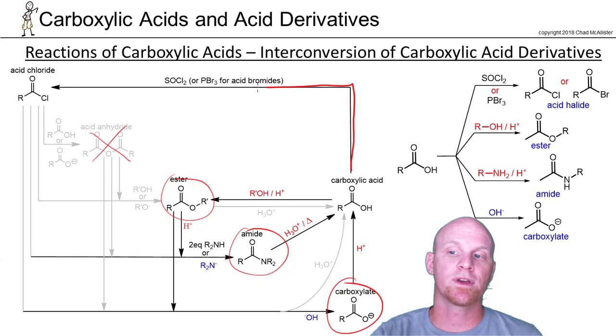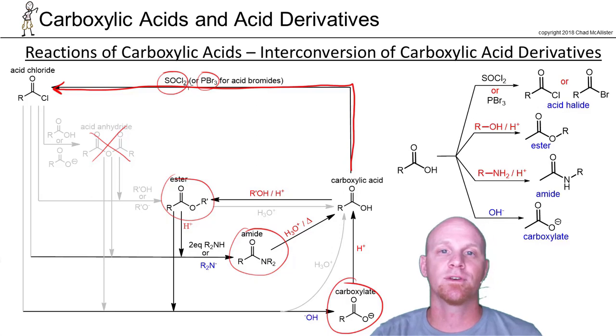But if you recall, this was one of the rare times where we can do an uphill reaction and make the acid chloride either using SOCl2 or the acid bromide using PBr3. So a couple unique things here.